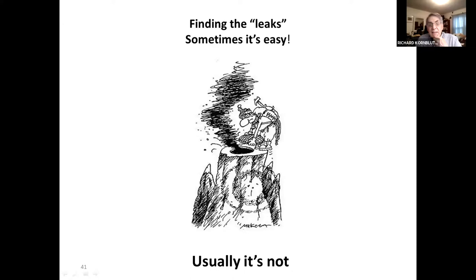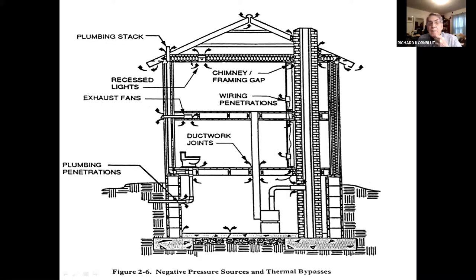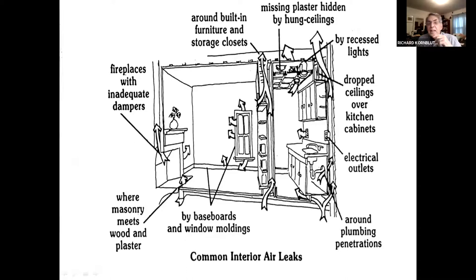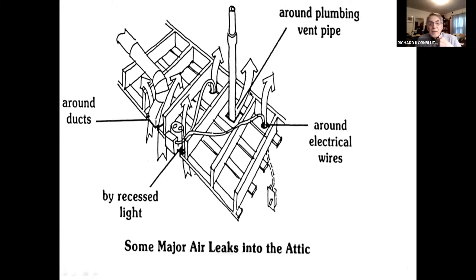Finding leaks is sometimes easy and usually not. The leaks most consequential for heat loss to the attic are those hidden in the framing — you can walk around your house and look up at the ceilings and think there are no holes, but they are at the tops of partition walls, pipe chases, and electrical penetrations. Examples include areas around built-in furniture and closets, recessed lights, drop ceilings — a huge source usually found in kitchens — electrical outlets, and the plumbing vent pipe, which is basically a giant highway for heat transfer.